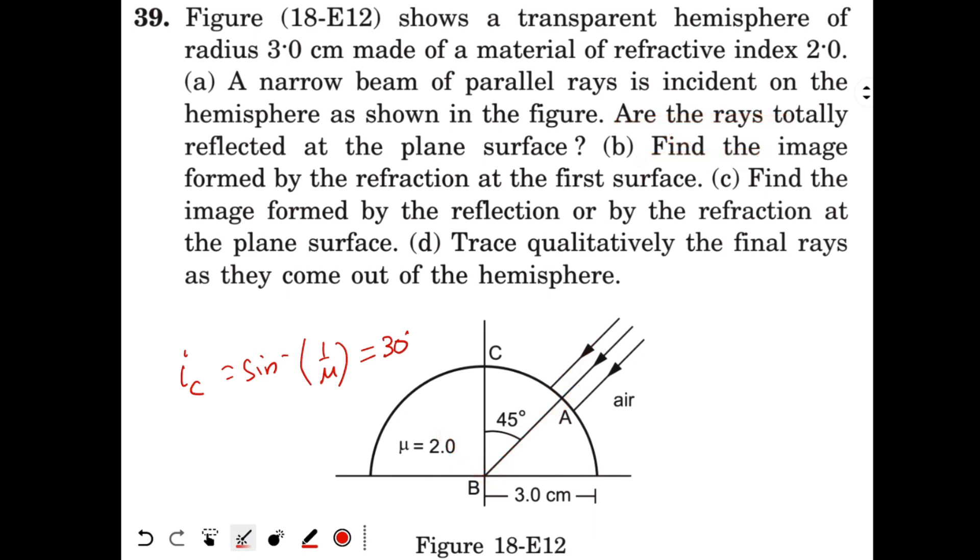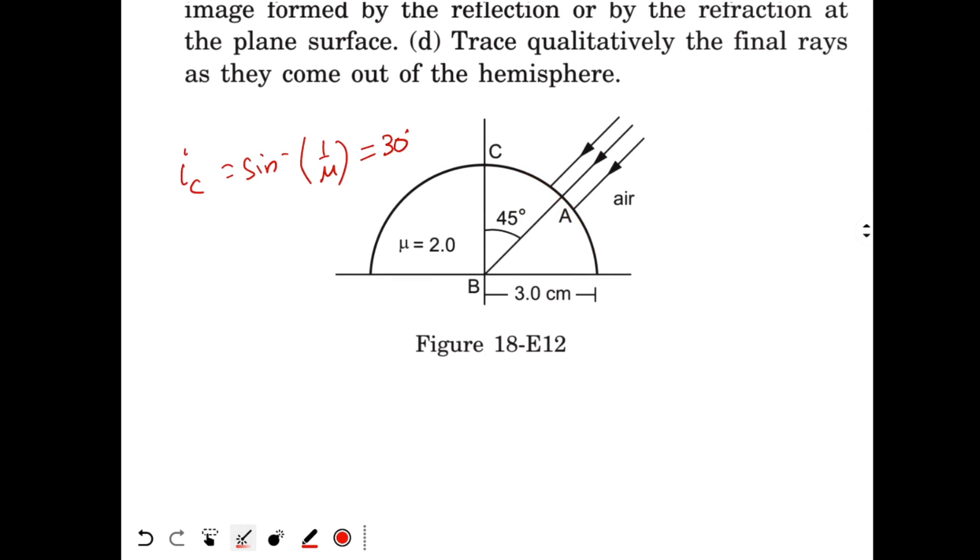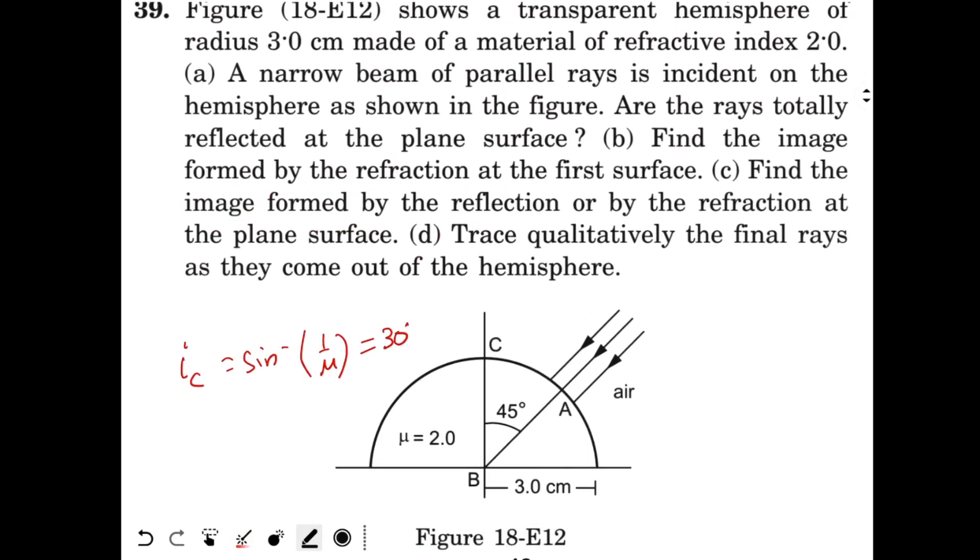Now let's look at part B. Find the image formed by the refraction at the first surface. Light rays are coming here and will be refracted by the surface. So where is the image formed? For that, this will act like your principal axis. So let's draw the diagram again. This is my principal axis, the refracting surface of radius. Now I'm taking this direction as positive, and radius is also in this direction, so radius is positive, 3 cm.